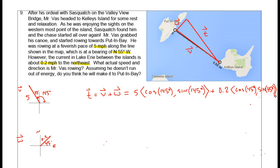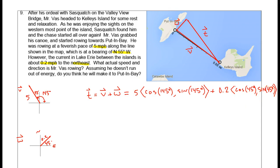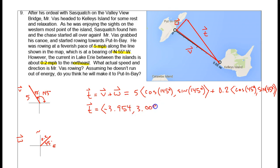From this point it's a calculator problem. You just need to do each of these in your calculator. What you'll get is the following: the true vector is equal to negative 3.954, 3.009. That is the component form of the true vector.